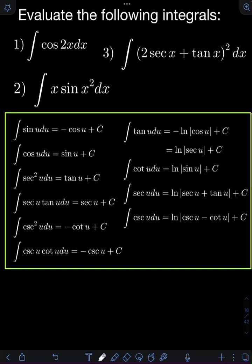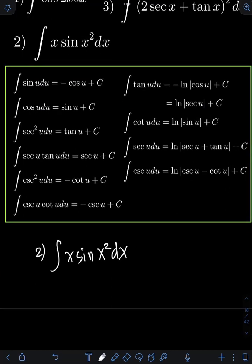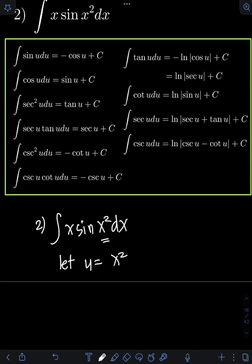Next, we have the integral of x sine x squared dx. So let's use u-substitution first. Let u be equal to x squared. Getting the derivative of both sides: the derivative of u is du, and the derivative of x squared is 2x dx.